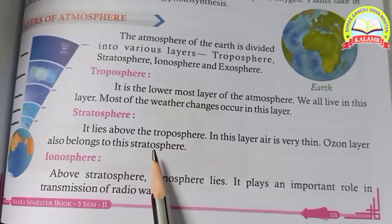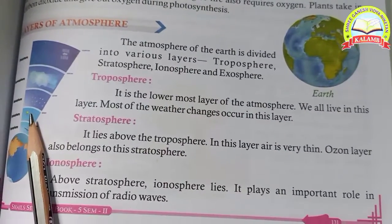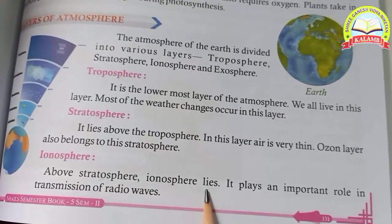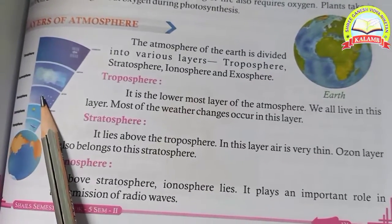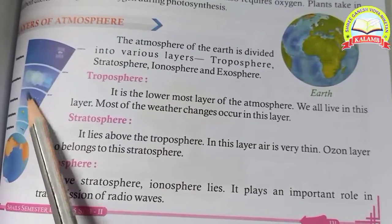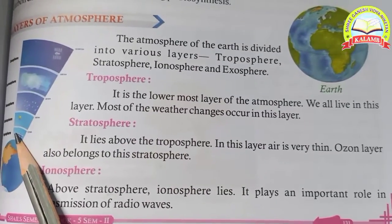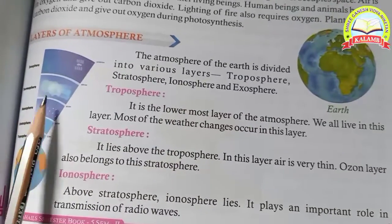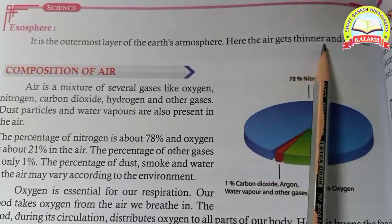The ozone layer also belongs to the stratosphere. Above the stratosphere is the ionosphere. It plays an important role in the transmission of radio signals. Above that is the exosphere, the outermost layer of the earth's atmosphere, where air gets thinner and thinner.